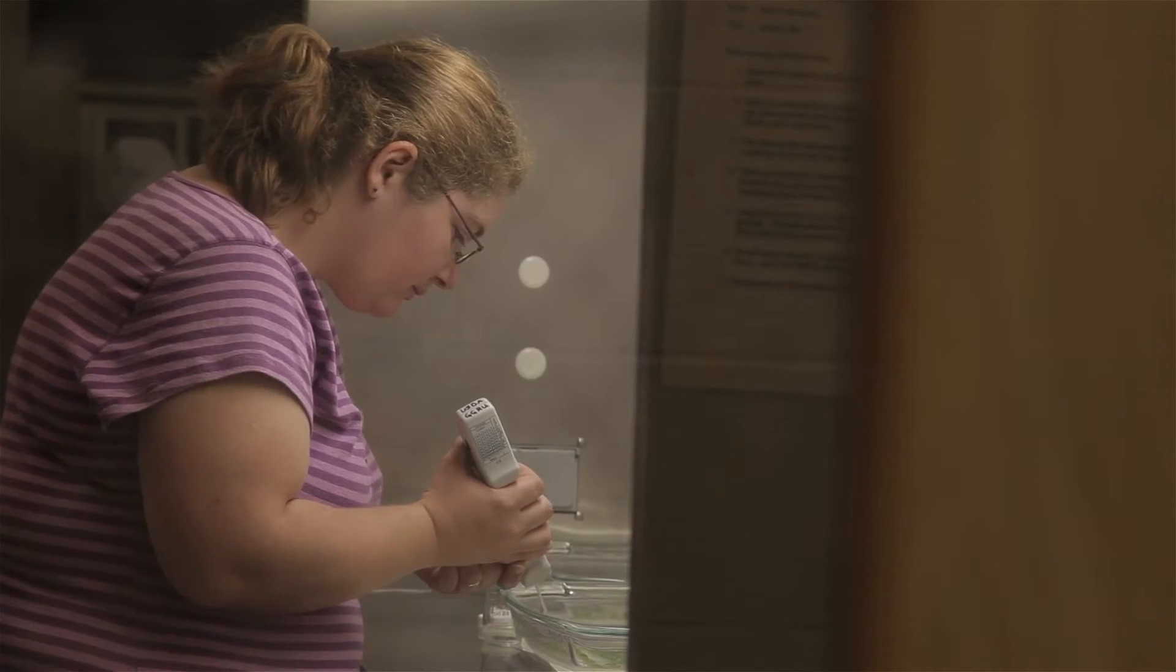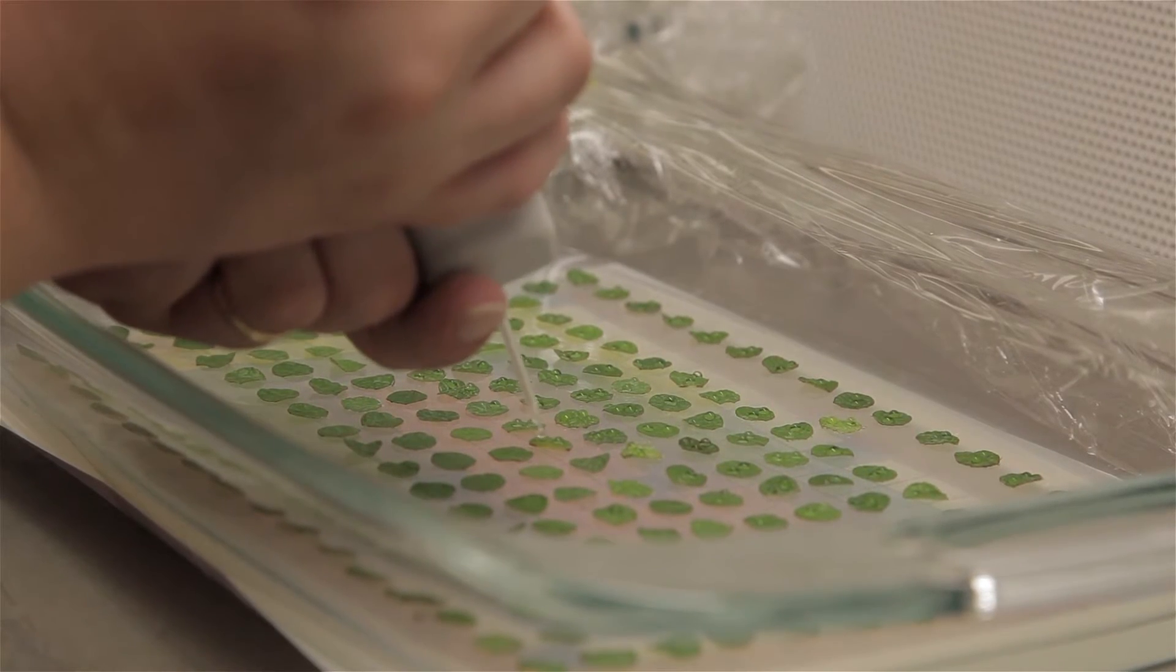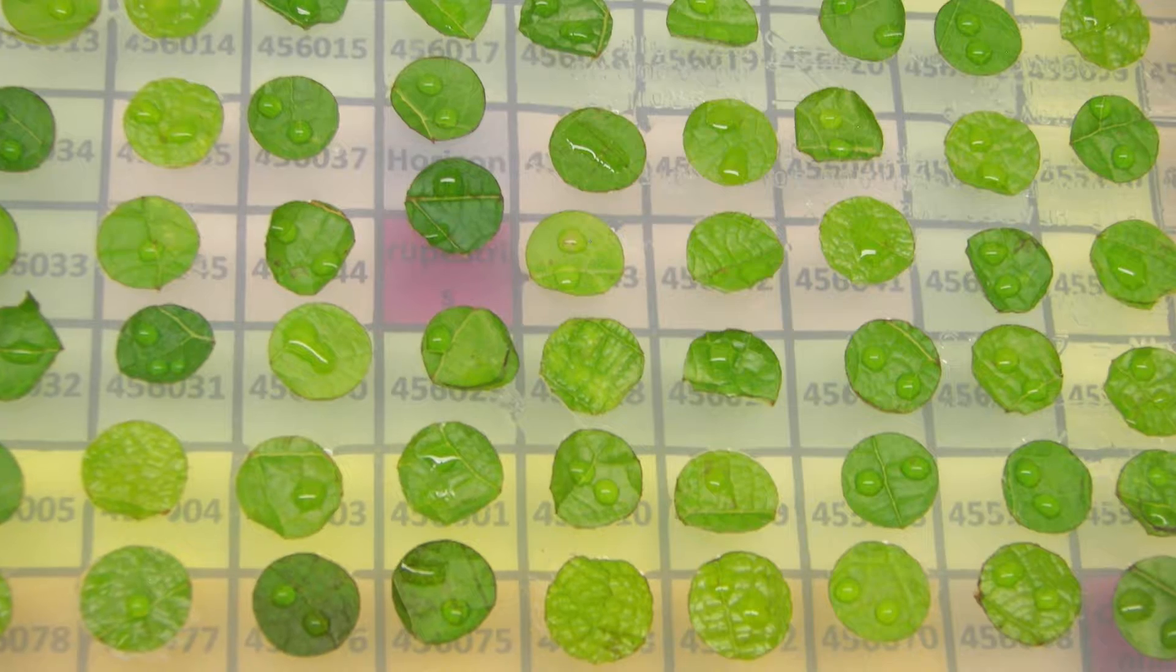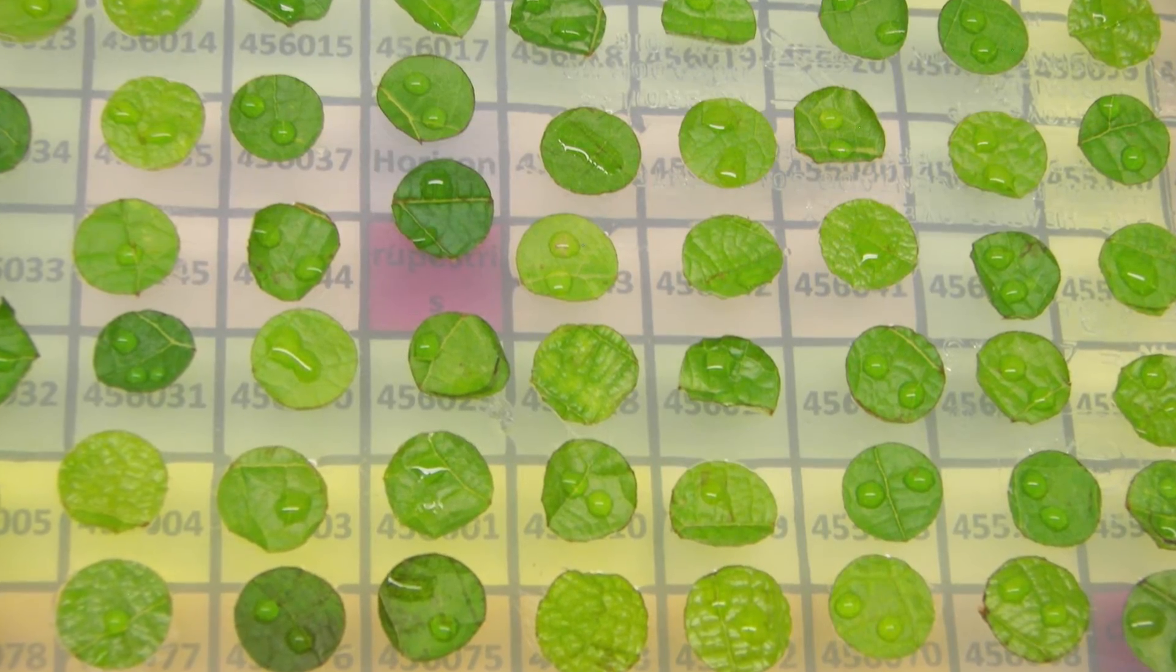Then we take the water and put two drops of the spore water suspension on each leaf disc. After the leaf discs are inoculated with powdery mildew, they need to be assessed to determine whether or not the leaf was resistant or susceptible to powdery mildew.